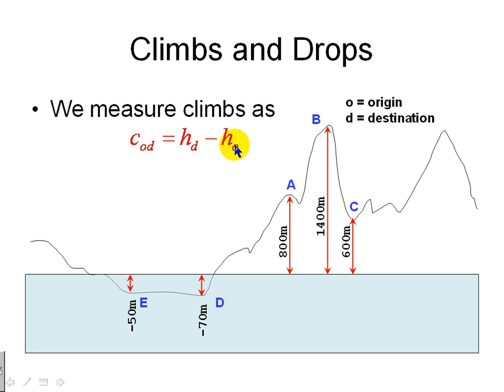That means that if the destination is higher than the origin, we have a positive climb and the other way around. So, we can also measure drops as the drop from an origin to a destination tells us how much higher the origin is than the destination. When we have a positive drop, that means that the origin is higher than the destination. So, if we drop from B to C, the drop is height of the origin, 1400, minus height of the destination, 600. That is 800 meters of positive drop. It's a positive drop. We're moving downwards.